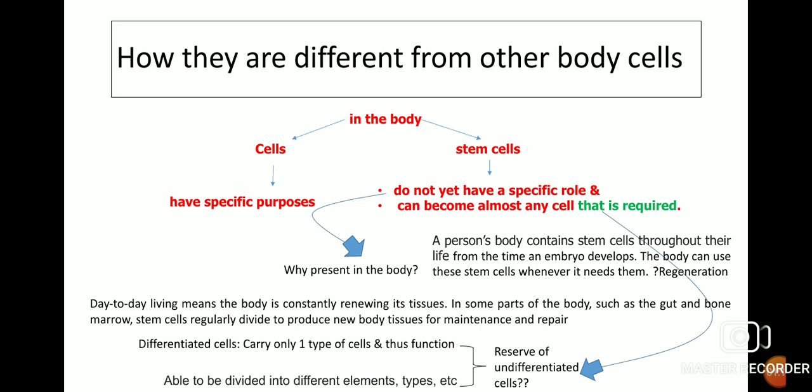A person's body contains stem cells throughout their life, from the time an embryo develops. The body can use stem cells whenever it needs them — especially in cases of regeneration. For example, day-to-day living means the body is constantly renewing its tissues. In some parts of the body such as the gut and bone marrow, stem cells regularly divide to produce new body tissues for maintenance and repair.